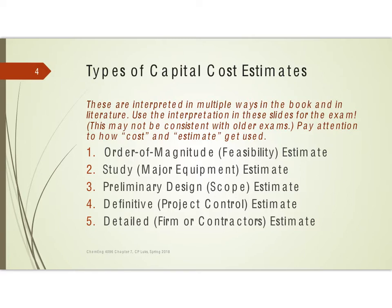There are several types of capital cost estimates. Using the language of this textbook, they are: the order of magnitude estimate, a study estimate, a preliminary design estimate, a definitive estimate, and a detailed estimate.